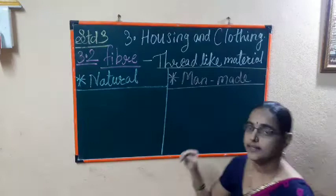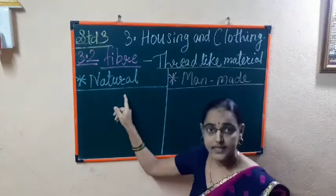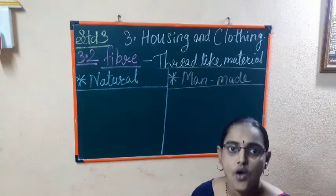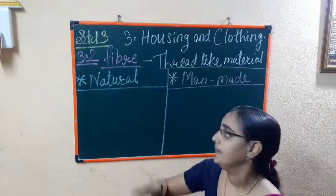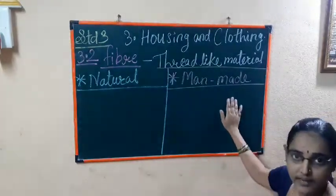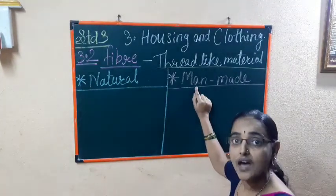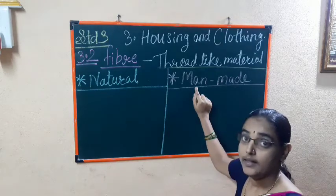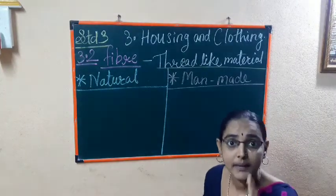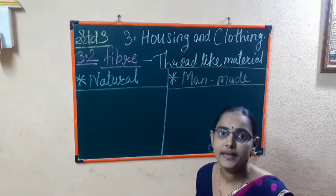Natural fibers are fibers available in nature — those are called natural fibers. Man-made fibers are fibers that are made by man, and those are called man-made fibers. We are going to learn everything about these in depth.